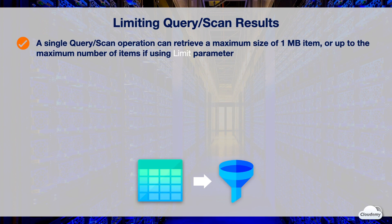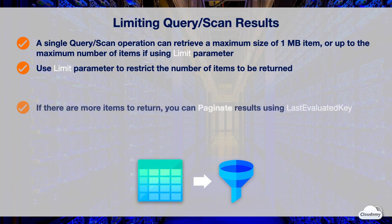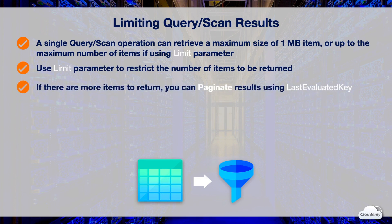A single query or scan operation can retrieve a maximum size of one megabyte, or up to the maximum number of items if using the limit parameter. You can use the limit parameter to restrict the number of items returned. If a last evaluated key is present in the query or scan response, it means there are more items to retrieve. You can use the last evaluated key to paginate the results. When there is no last evaluated key in the response, you have retrieved the final page. Pagination allows you to retrieve only a small number of items at a time — for example, paginating 10,000 items and returning only 100 at a time.